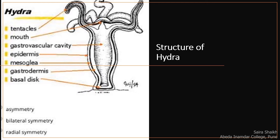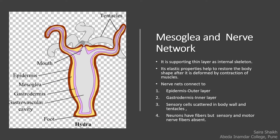Hydra is cylindrical in shape. At its anterior side, it has a mouth surrounded by tentacles, which are long processes. The mouth opens into a cavity called the gastrovascular cavity, which is lined by a membrane called gastrodermis. The outer side of the body has epidermis. The yellow color border in the figure is the mesoglea — it is an elastic, supporting layer that acts like an internal skeleton and maintains body shape. On its outer side, epidermis is present, and on its inner side, gastrodermis is present. Mesoglea has a nerve net formed by nerve cells that connect both layers.